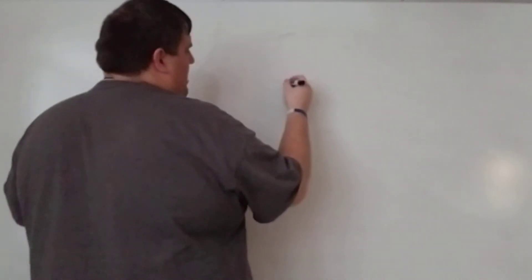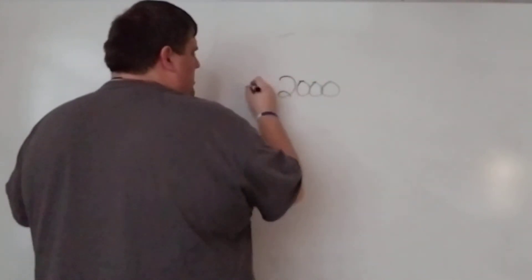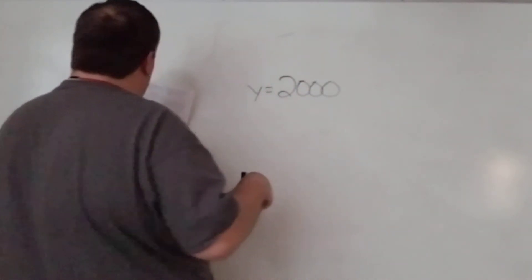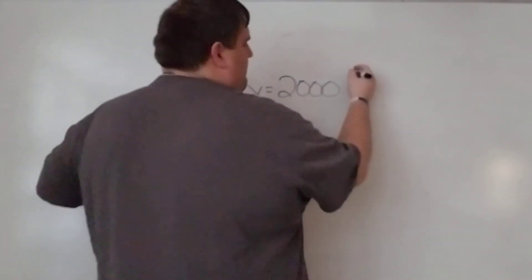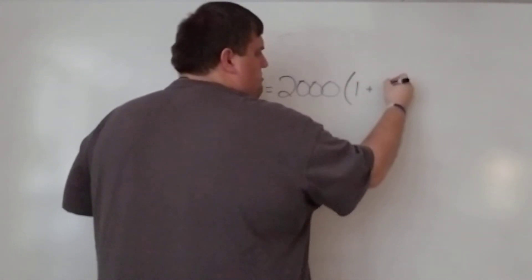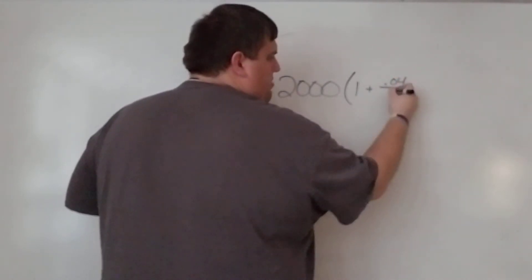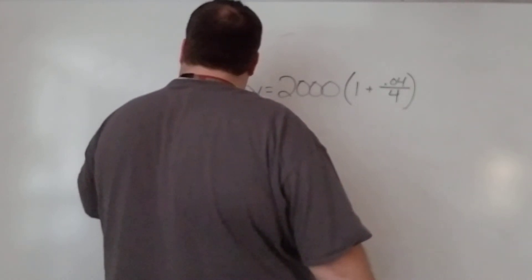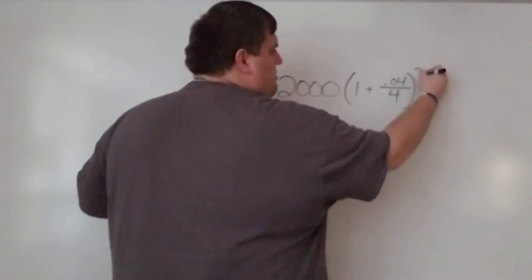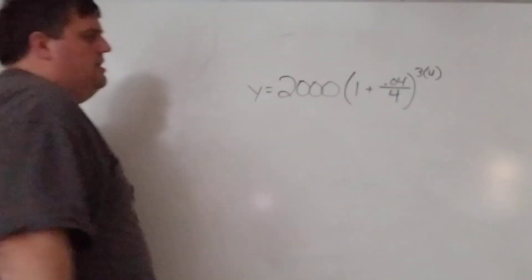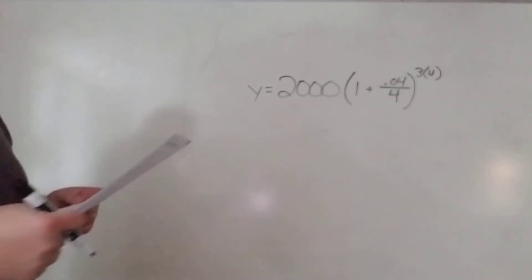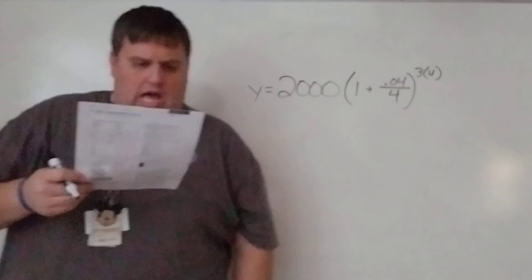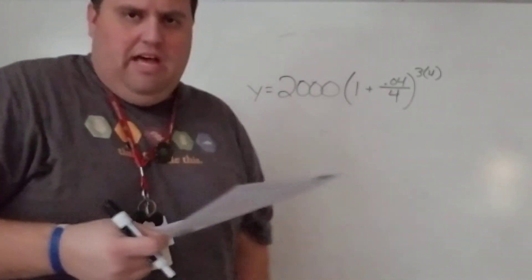Number eleven: we invest $2,000 — that's the starting point. The interest rate is four percent compounded quarterly, so we put 0.04 on top divided by four, then raise it to four times t. For three years that's to the 12th power. Plugging it in gives option B: $2,253.65.